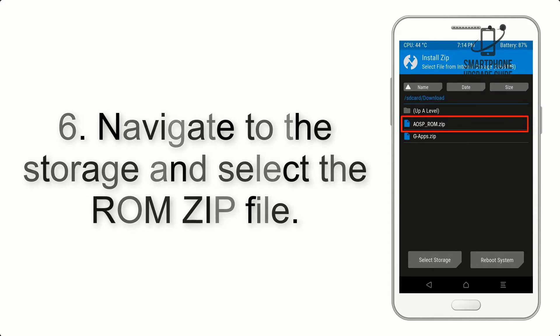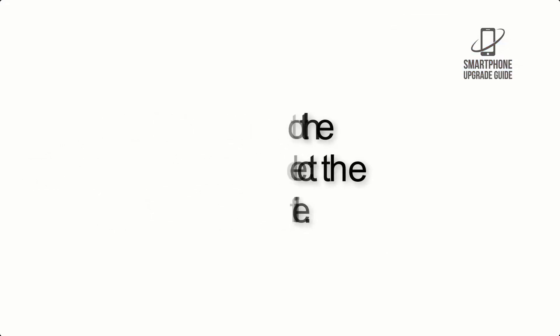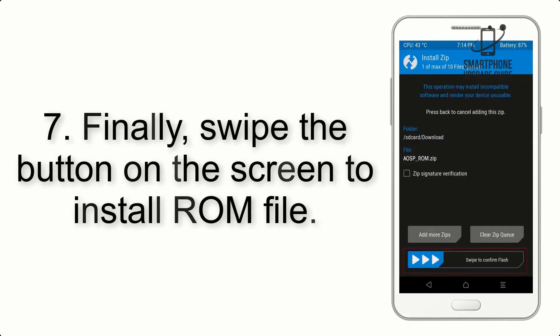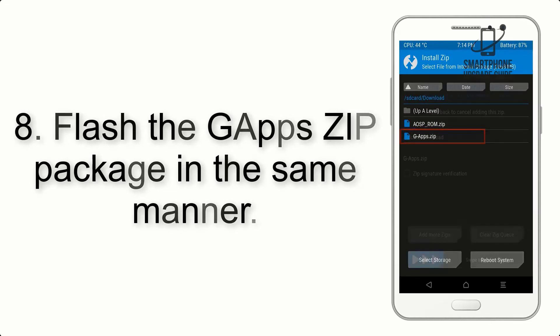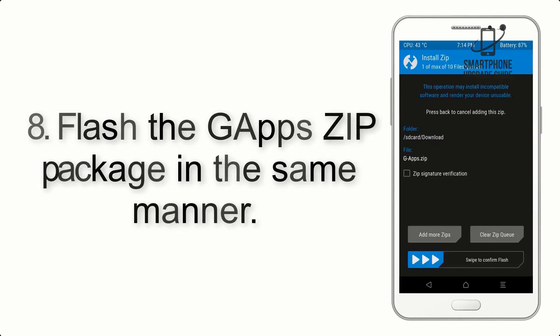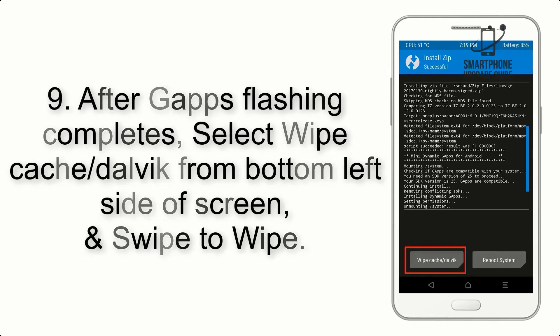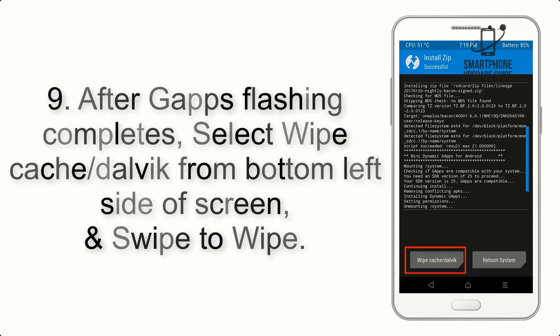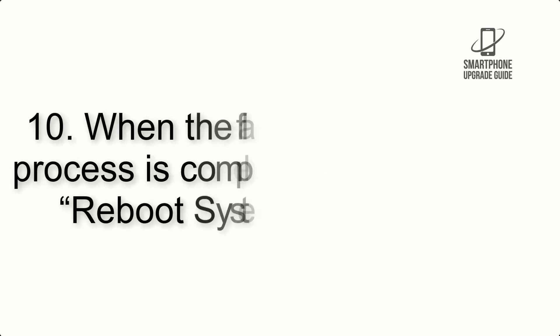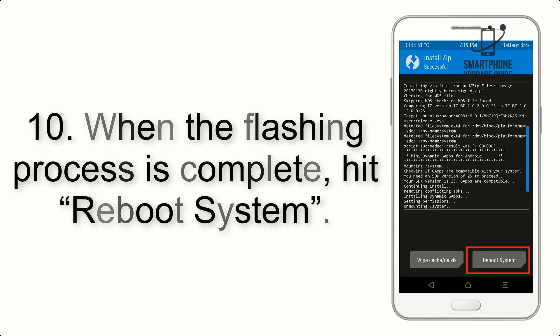Step 5: Go back to the recovery main screen and tap on the Install button. Step 6: Navigate to the storage and select the ROM zip file. Step 7: Swipe the button on the screen to install the ROM file. Step 8: Flash the GApps zip package in the same manner. Step 9: After GApps flashing completes, select Wipe Cache and Dalvik from the bottom left side of the screen and swipe to wipe.